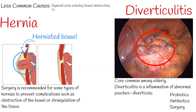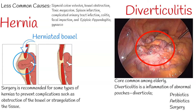Other less common causes of lower left abdominal pain include sigmoid colon volvulus, bowel obstruction, toxic megacolon, spleen infarction, complicated urinary tract infection, colitis, fecal impaction, epiploic appendigitis, gynecologic disorders, cancer obstruction, and leaking abdominal aortic aneurysm.